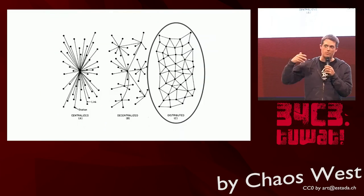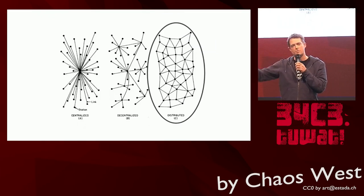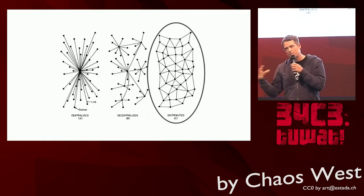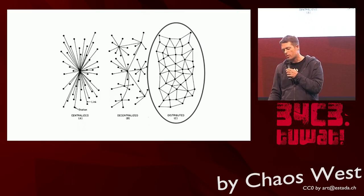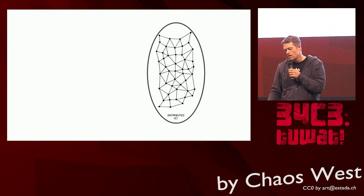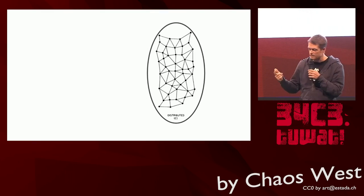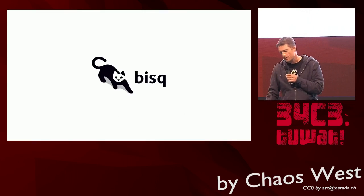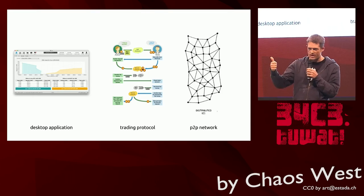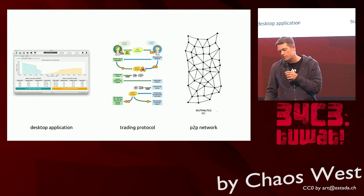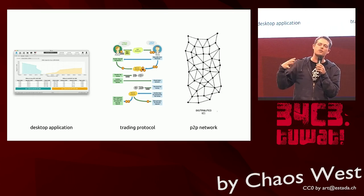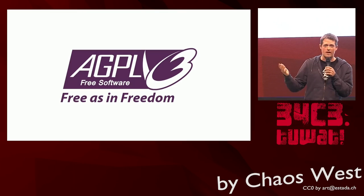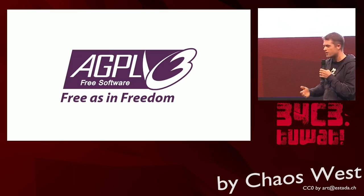Third, Bisq is the peer-to-peer network formed by all of these Bisq applications — all these Bisq clients working together, connecting with each other, implementing the Bisq trading protocol. The Bisq network is fully peer-to-peer in that it requires no centrally controlled servers and has no central points of failure. So Bisq is a desktop application, a trading protocol, and a peer-to-peer network that all work together to form a decentralized Bitcoin exchange. Bisq is GPL licensed — free software for free people.